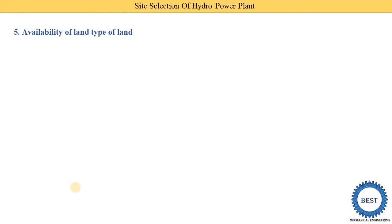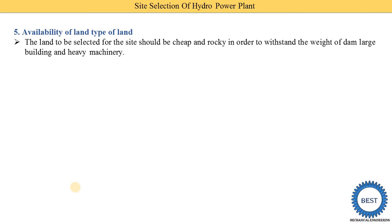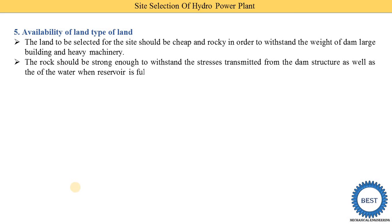Fifth point is the availability of land and type of land. The land selected for the site should be cheap and rocky in order to withstand the weight of the dam, large buildings, and heavy machinery. The weight of the dam is very high because lots of concrete and steel are used. The available land must have proper strength — rocky land is required and available at lower cost. The rocks must be strong enough to withstand the stresses transmitted from the dam structure as well as the water stored in the reservoir, and the land must have enough strength to absorb these stresses.